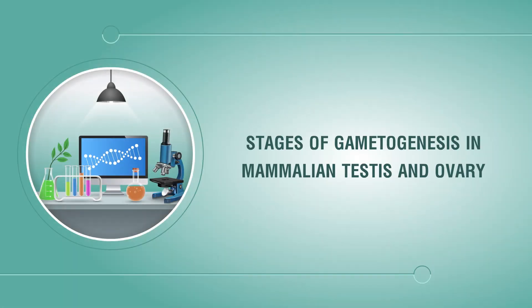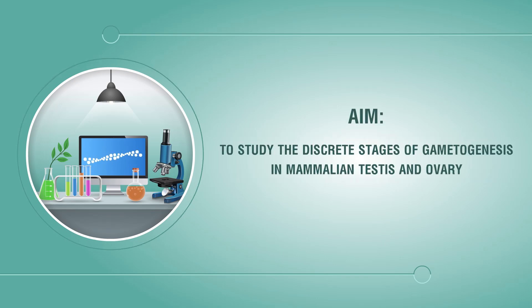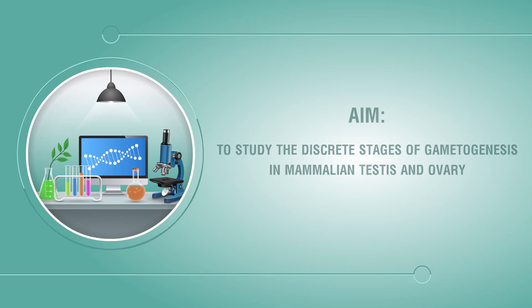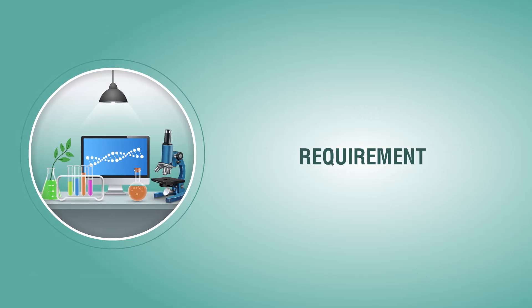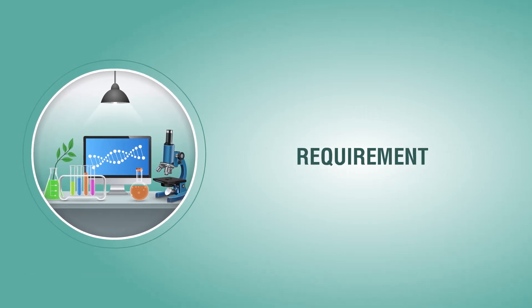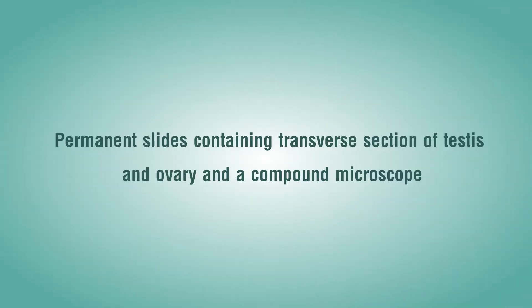Stages of Gametogenesis in Mammalian Testes and Ovary. The aim is to study the discrete stages of gametogenesis in mammalian testes and ovary. Requirements: permanent slides containing transverse sections of testes and ovary, and a compound microscope.